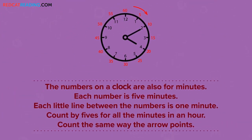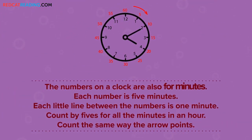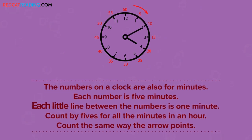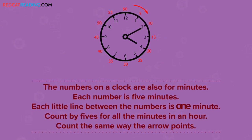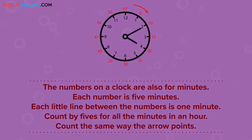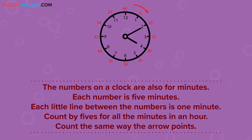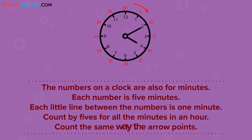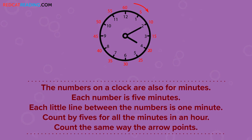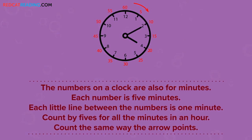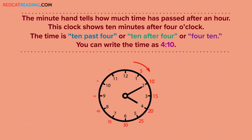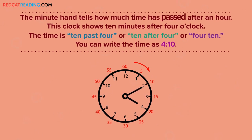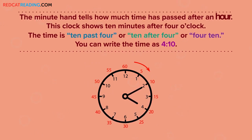The numbers on a clock are also for minutes. Each number is five minutes. Each little line between the numbers is one minute. Count by fives for all the minutes in an hour. Count the same way the arrow points. The minute hand tells how much time has passed after an hour.